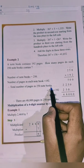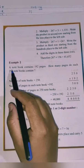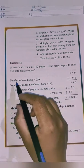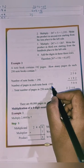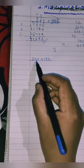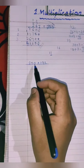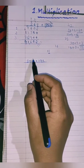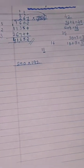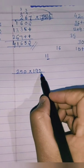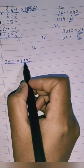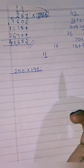So we have to calculate the total number of pages in 250 notebooks. What you have to do is multiply: 250 into 192. Let's do this. As you know, we have to start from the unit place. First we'll take the 2 which is in the unit place and multiply it with the whole number, then 9 with the whole number, then 1 with the whole number.